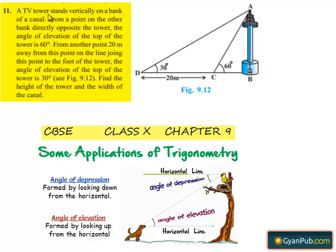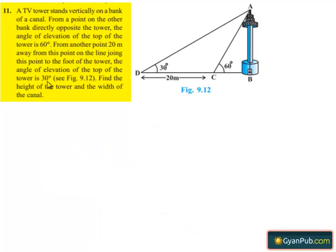Coming to the 11th question. A TV tower stands vertically on the bank of the canal. From a point on the other bank directly opposite to the tower, the angle of elevation of the top of the tower is 60 degrees. From another point 20 meters away from this point on the line joining this point to the foot of the tower, the angle of elevation of the top of the tower is 30 degrees. Find the height of the tower and the width of the canal.